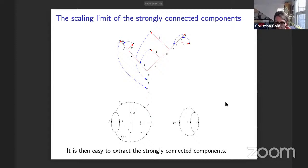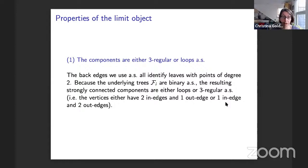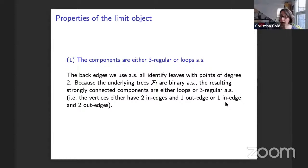I haven't given an explicit description of the limit object, and I'm not hopeful that it's possible to do so. But let me discuss some properties. The first claim in the theorem was that the components are either three-regular or loops almost surely. A loop arises if a tree contains a single ancestral back edge — that gives a loop of length equal to the distance between the vertex started from and the vertex ended at. More complicated components require more complicated back edge structures.